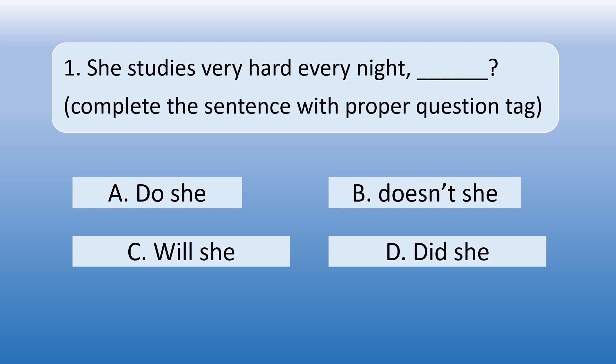Options are, Option A: Do she? Option B: Doesn't she? Option C: Will she? Option D: Did she?